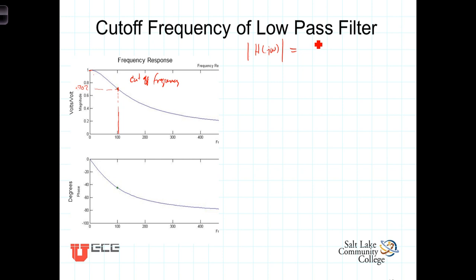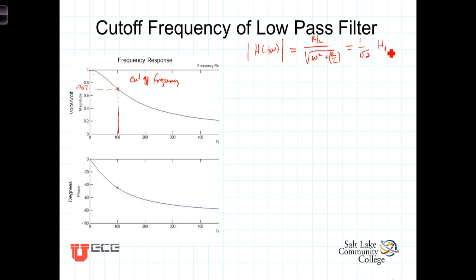For the low-pass RL filter, the magnitude of H of j omega equals R over L divided by the square root of omega squared plus R over L squared. We want to set that equal to 1 over the square root of 2 times H max, and the value of omega that satisfies this will be our cutoff frequency.